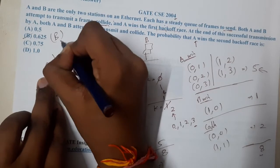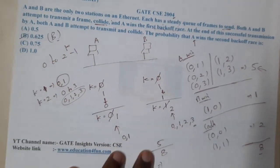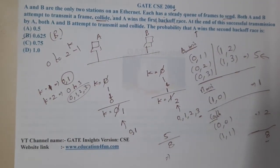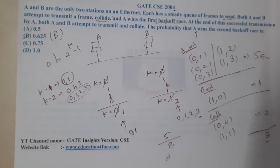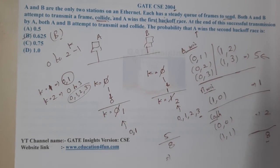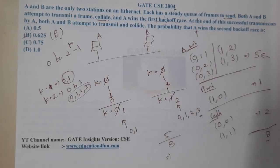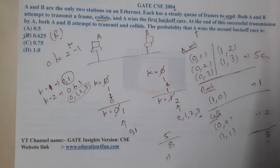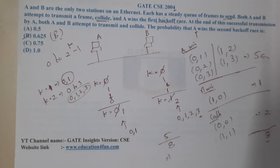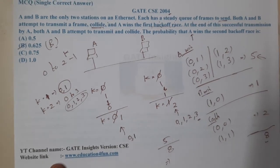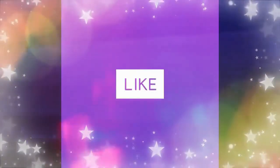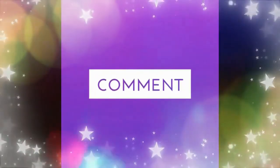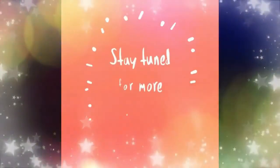So option B — 0.625 — is the correct answer. This is a straightforward question based directly on probability and the concept of ALOHA. I hope everyone got a clear idea. In the next lecture we will continue with the next question. Thank you, and thanks for watching — like, share, and subscribe for more videos.